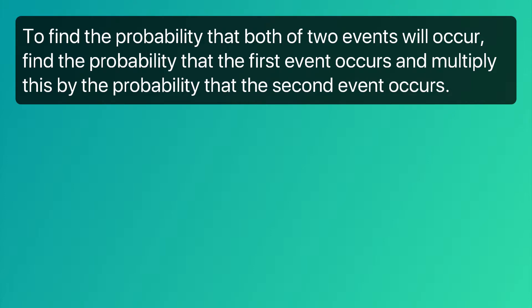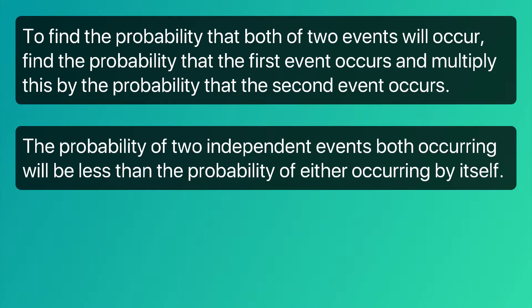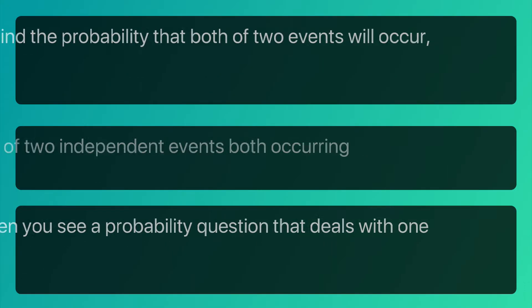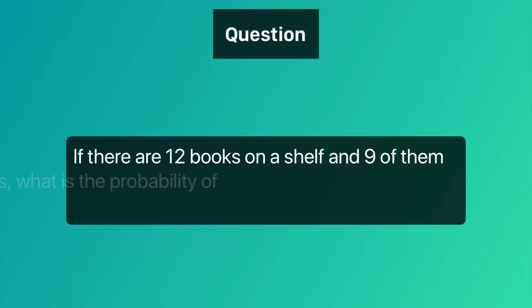To find the probability that both of two events will occur, find the probability that the first event occurs and multiply this by the probability that the second event occurs. The probability of two independent events both occurring will be less than the probability of either occurring by itself.